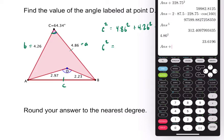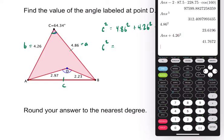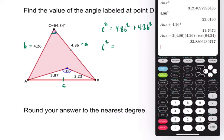4.86 square button. Okay. Plus 4.26 square button. Boom. So minus twice 4.86 times 4.26 times the cosine of 64.34. There it is. So C squared is 23.836.